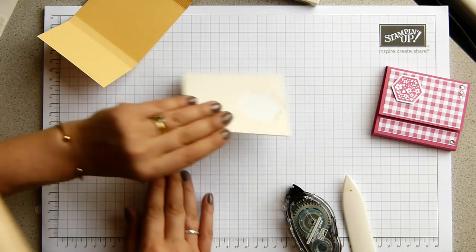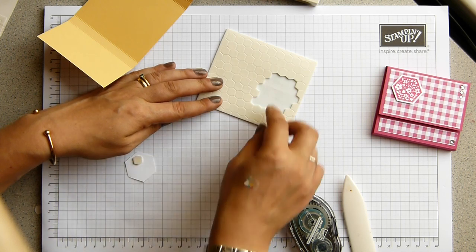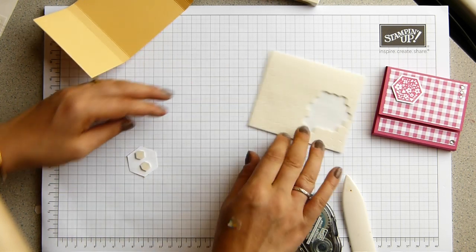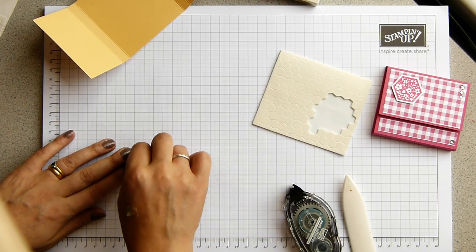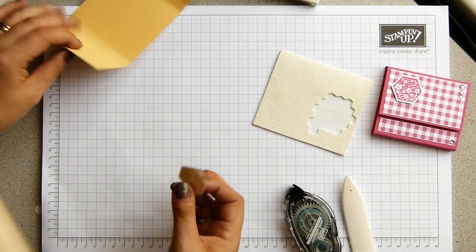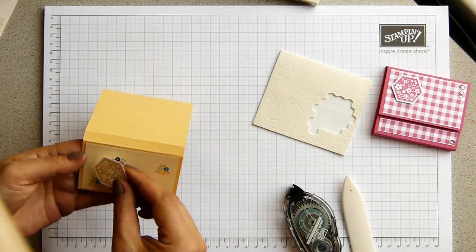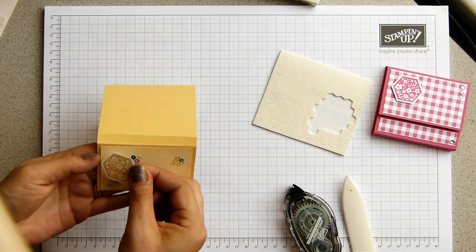So I'm going to get a dimensional for the back of there. Actually, maybe two, because I don't want this to come off. I'm going to pop that up in the top left-hand corner, I think.